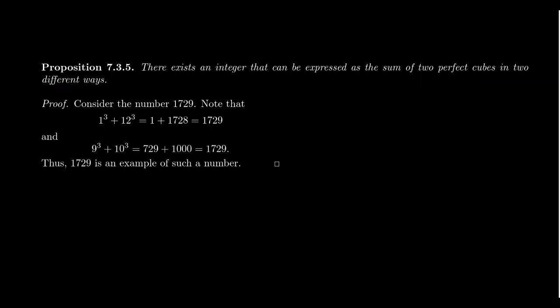Consider the number 1,729. Notice that 1729 is equal to 1 cubed plus 12 cubed, because 1 cubed is 1, and 12 cubed is 1728. Likewise, 1729 is also equal to 9 cubed plus 10 cubed, because 9 cubed is 729, and 10 cubed is equal to 1,000. So here is, in fact, a number, an integer, which can be expressed as a sum of two different, it can be expressed as a sum of two perfect cubes in two different ways.